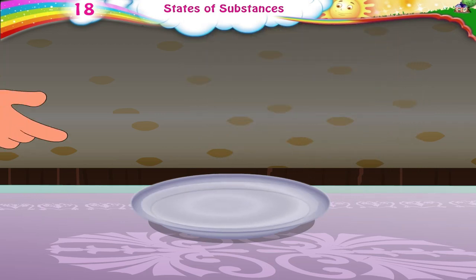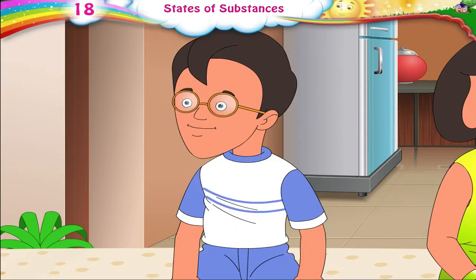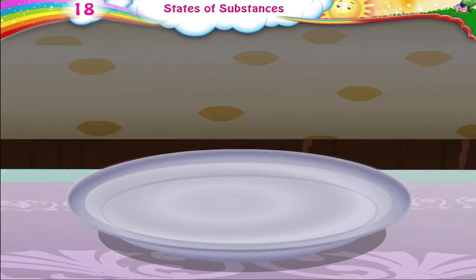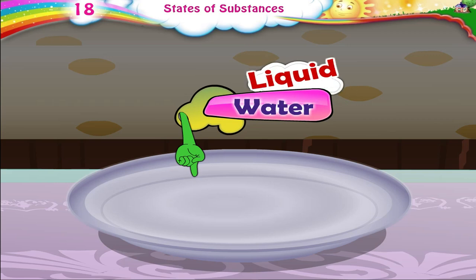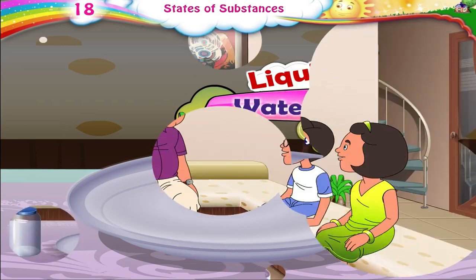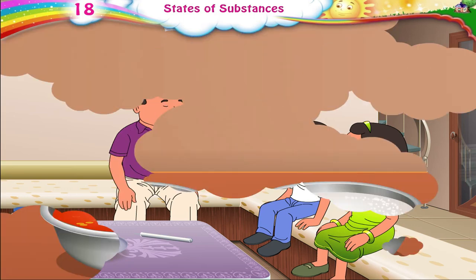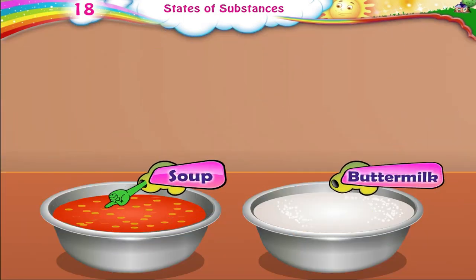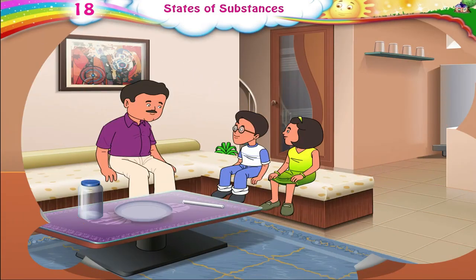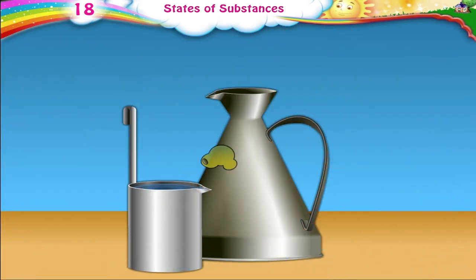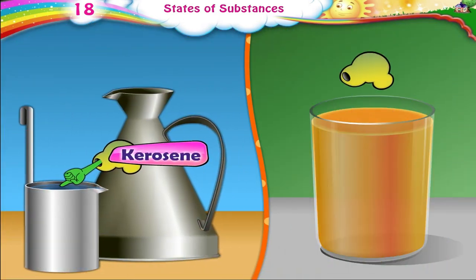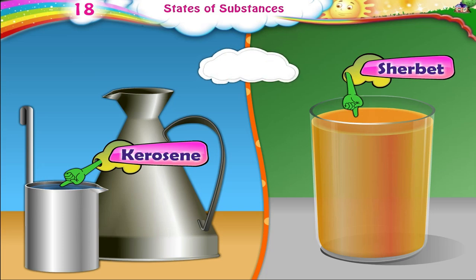Look. It has changed its shape again. It has taken the shape of the dish. Water is a liquid. Liquid is a state of a substance. Can you name some things that can change their shape? The soup and the buttermilk. Very good, Raj. Kerosene and sharbat are also liquid substances.